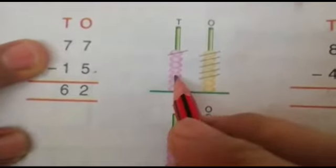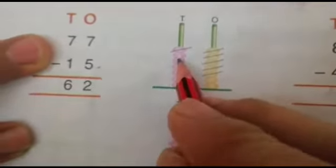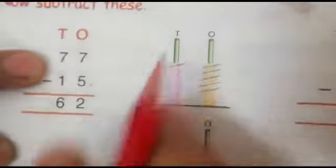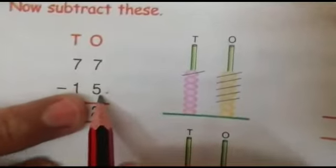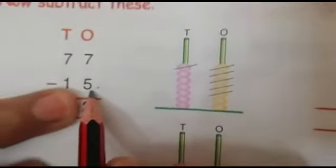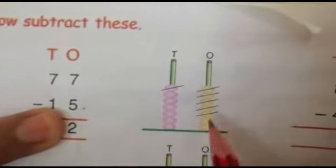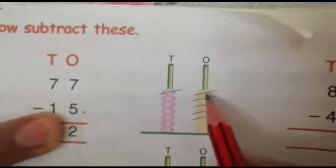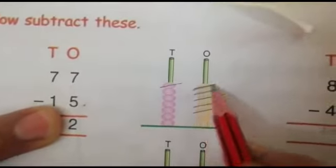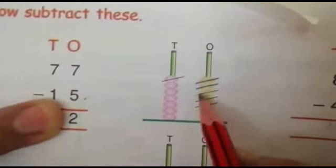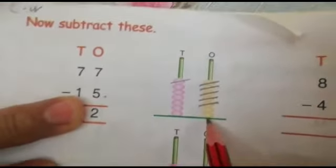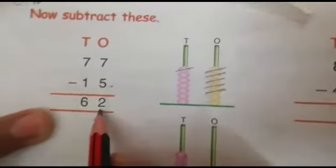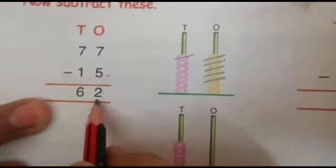1, 2, 3, 4, 5, 6, 7. And how many 1s we have to cut from 7? 5. 1, 2, 3, 4, 5. How many are left? 2. 2 is written here.